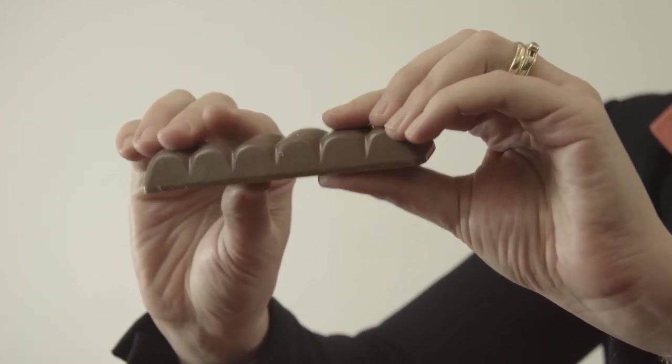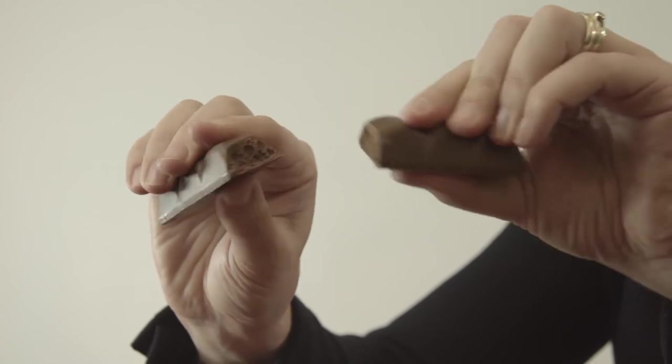However, if I try to break the other bar, the other bar which is a different type, it simply snaps into two.